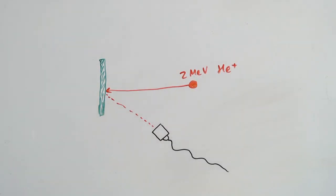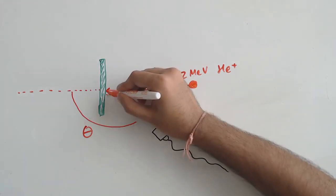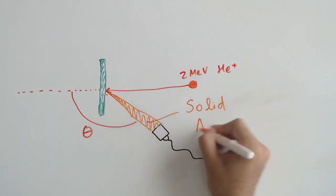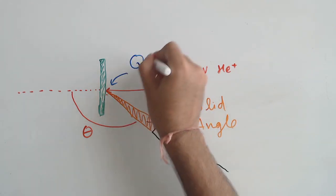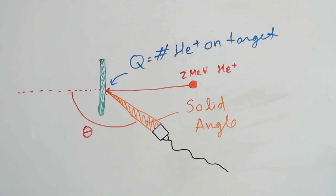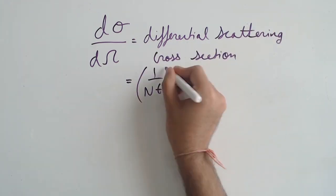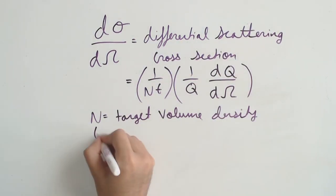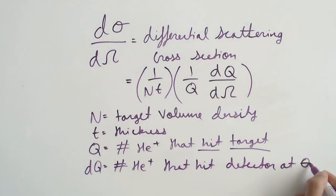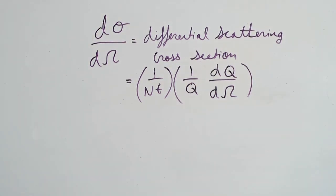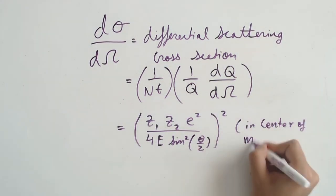The differential scattering cross-section is defined from taking into account the solid angle recorded by the detector, the total number of particles that have impinged on the target, as well as the number of particles actually captured by that solid angle in that detector. So you get an expression that ties in the atomic numbers of both the target and the projectile, the energy, as well as the angle at which your detector is placed.